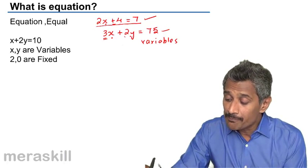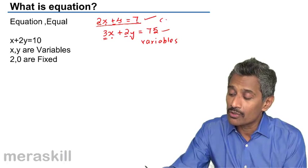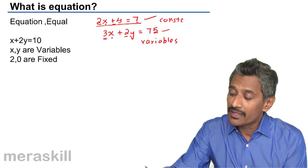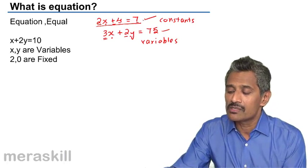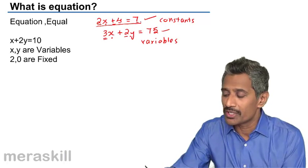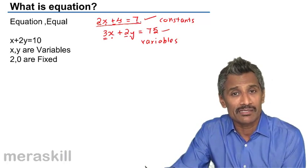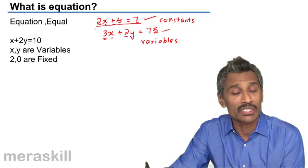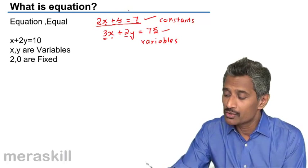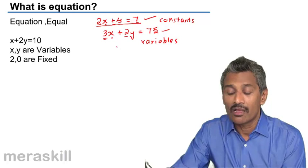But 3, 2, 4, 7—they are all called constants. They are called constants because in whichever situation, the value of 7 is going to remain 7, the value of 4 is going to remain 4, the value of 2 will always be 2. So these are constants and these are variables.